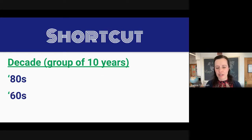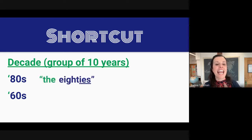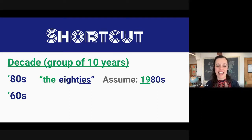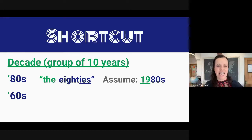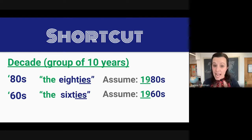Now, there is a shortcut. You see here these decades — the 1980s and the 1960s. But it is also very common just to say the 80s. You can assume that the person speaking means the 1980s. So it is very common for people to just say the 80s instead of 1980s. In the same way, this is the 60s, and again we assume the 1960s. We don't need to say 19 — you can, but sometimes people just say the 60s.